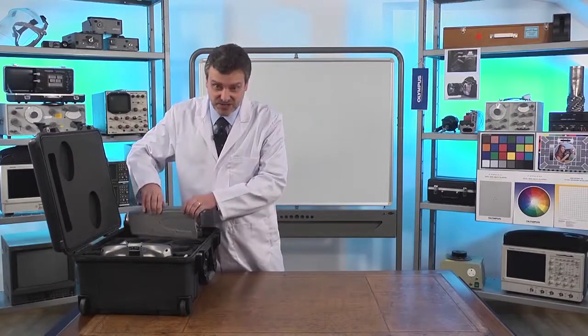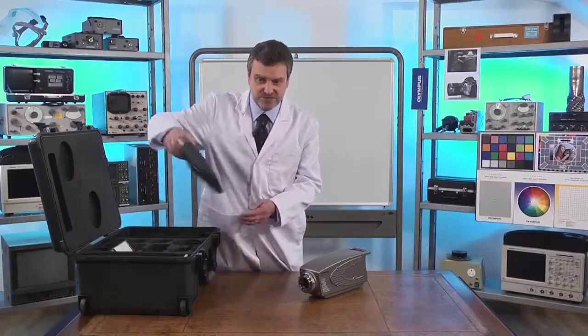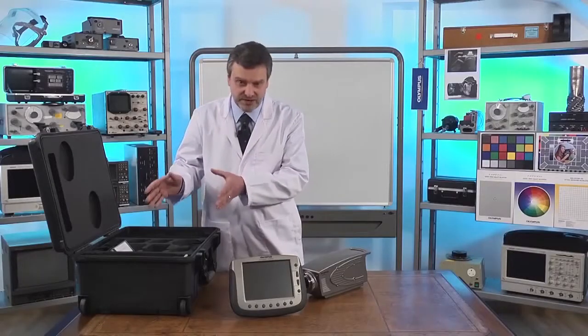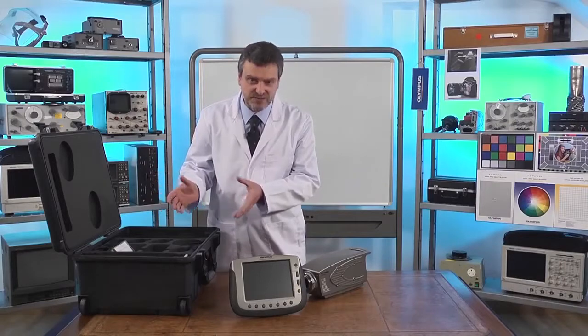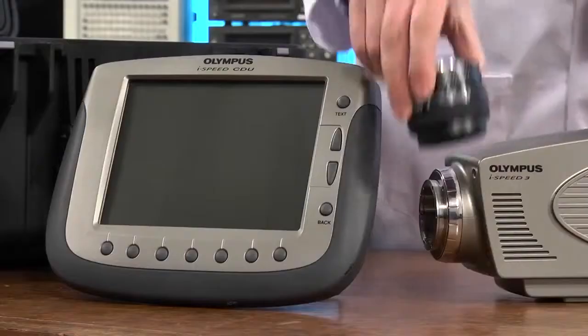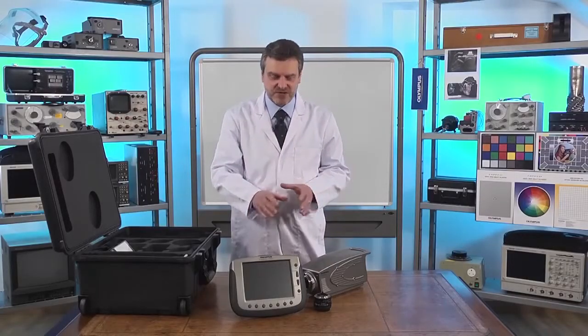Inside the case you'll receive your Olympus iSpeed 3 camera, your controller display unit, all the cables and the power supply that you'll need to take high-speed video, and there's a space for your lenses. Everything you need to take high-speed video is right here.